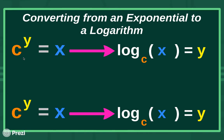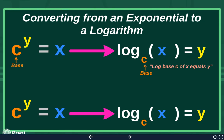Let's review the parts of the exponential equation. The c is called the base, and logarithms also have bases. This little c below the log is also the base — the base of your exponential becomes the base of the logarithm. The way you say this is: log base c of x equals y. This c is not c raised to the x power — the x value is inside of your logarithm. So this is log base c, with the little number down here as the base, of x equals y.